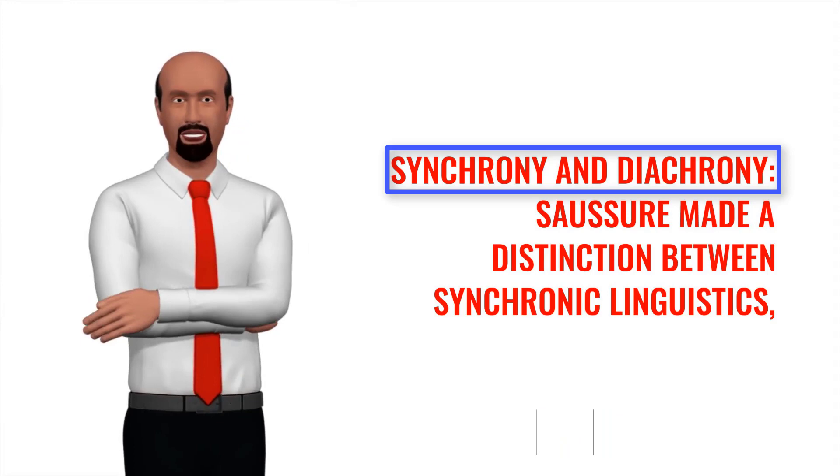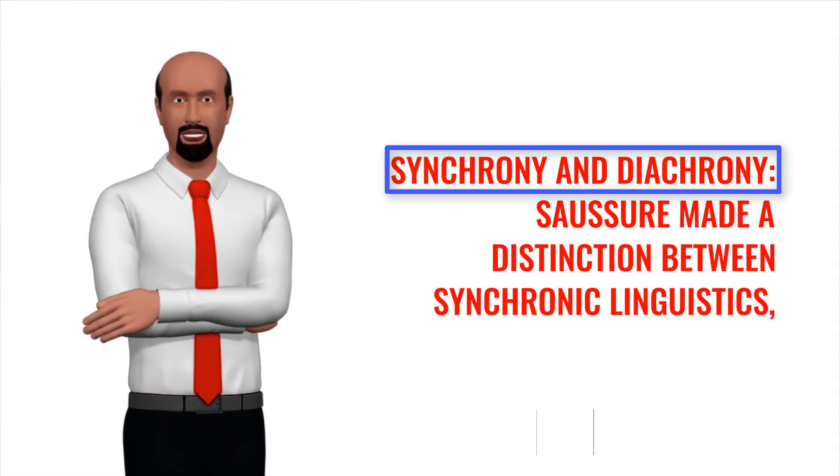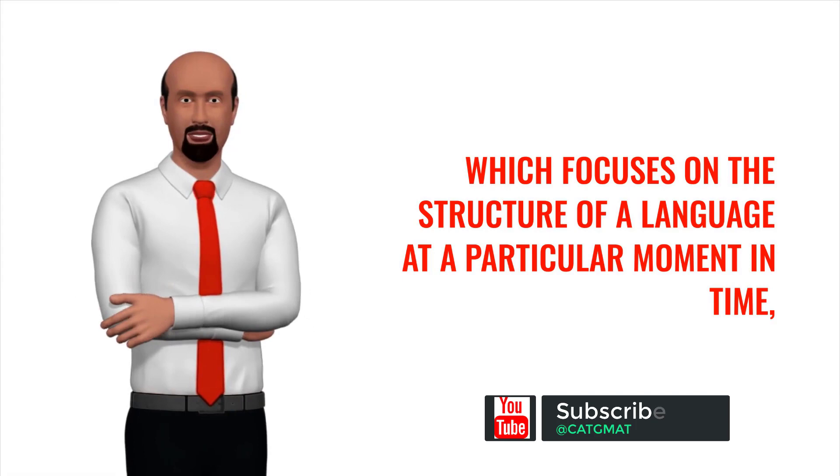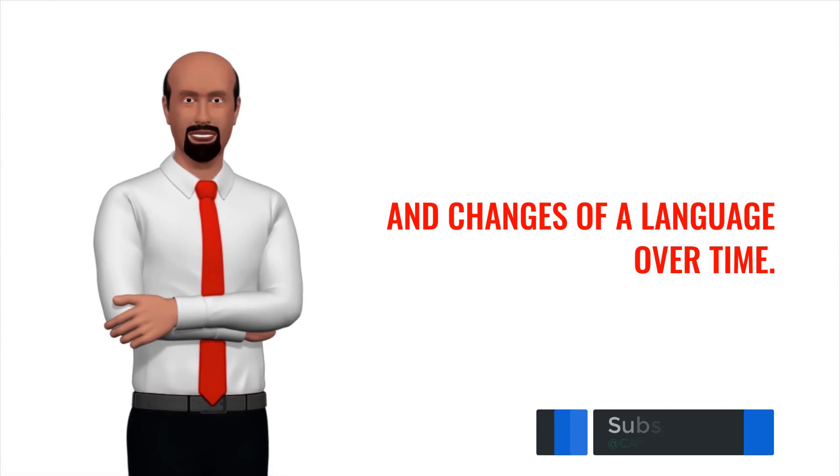Synchrony and diachrony: Saussure made a distinction between synchronic linguistics, which focuses on the structure of a language at a particular moment in time, and diachronic linguistics, which studies the historical development and changes of a language over time.